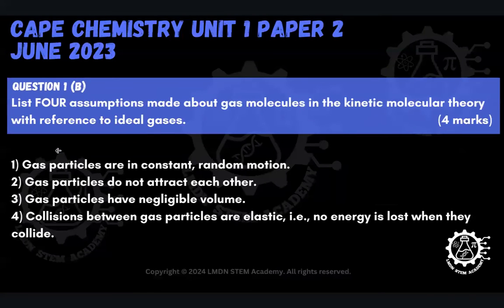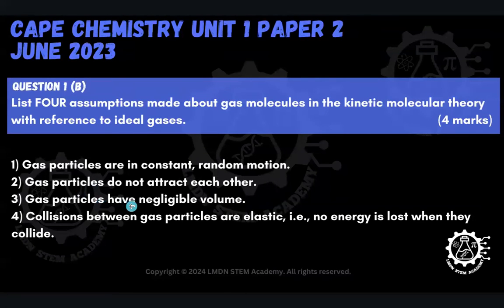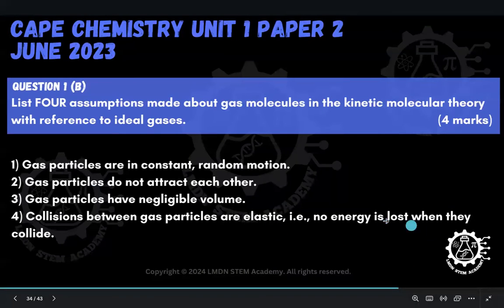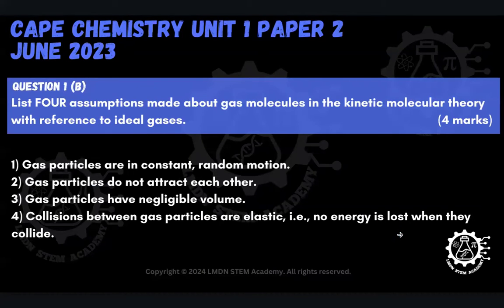The four assumptions are: First, gas particles are in constant random motion — they are constantly moving and moving randomly. Second, gas particles in an ideal gas do not attract each other; there are no forces of attraction between them — that is negligible. Third, gas particles have negligible volume compared to the total volume of the container they're in. And lastly, the collisions between gas particles are elastic — when they bump into each other or the walls of the container, no energy is lost; energy is completely conserved.